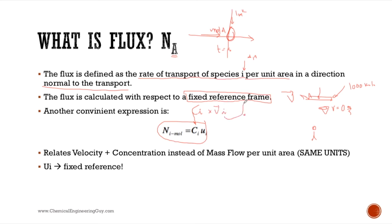This is a convenient expression because we relate concentration of i times the velocity of i, which is referenced to a given position. We have velocity - we're interested in how fast something is moving, how fast something is diffusing, how much time it's going to take, how much length it's going to cover. This relates concentration, and the concentration difference is the gradient or driving force for mass transport. The units are the same - mole of i per meter squared per second.